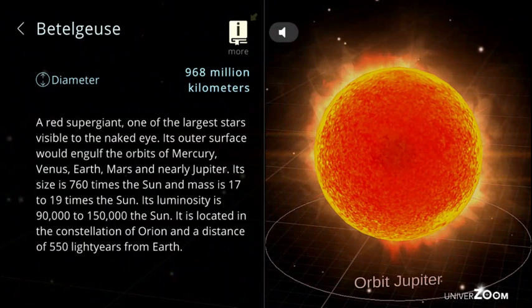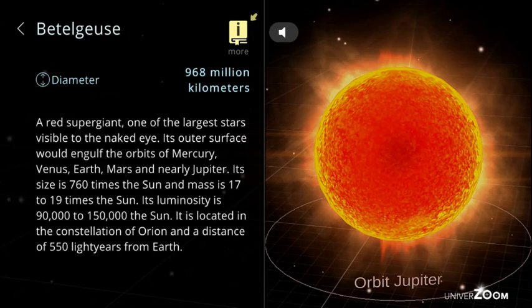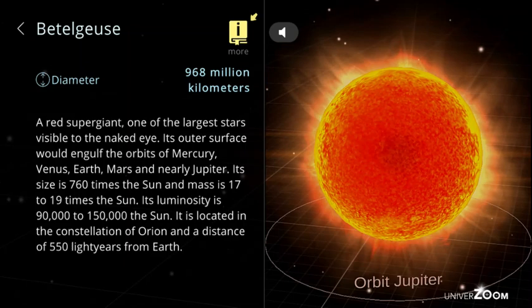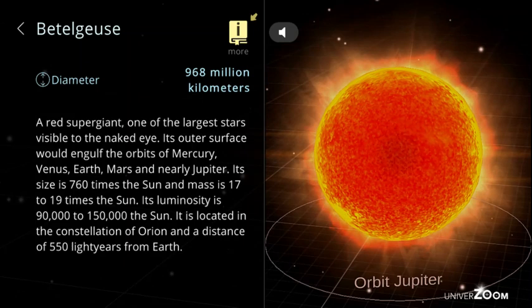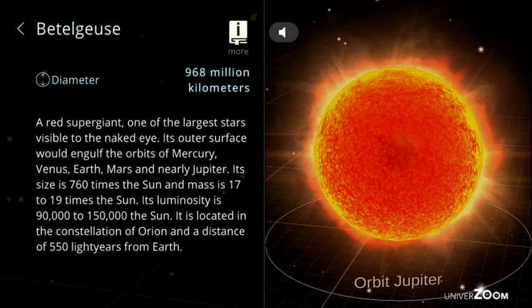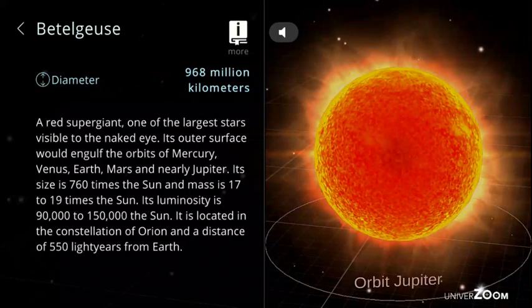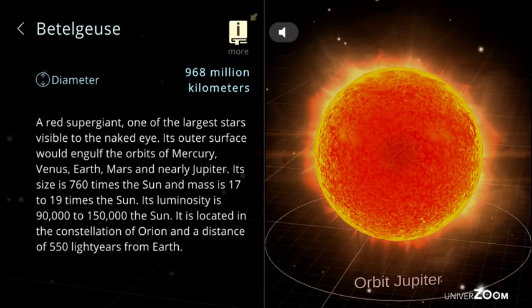Betelgeuse, diameter: 968 million kilometers. A red supergiant, one of the largest stars visible to the naked eye. Its outer surface would engulf the orbits of Mercury, Venus, Earth, Mars and nearly Jupiter. Its size is 760 times the sun and mass is 17 to 19 times the sun. Its luminosity is 90,000 to 150,000 the sun. It is located in the constellation of Orion at a distance of 550 light years from Earth.